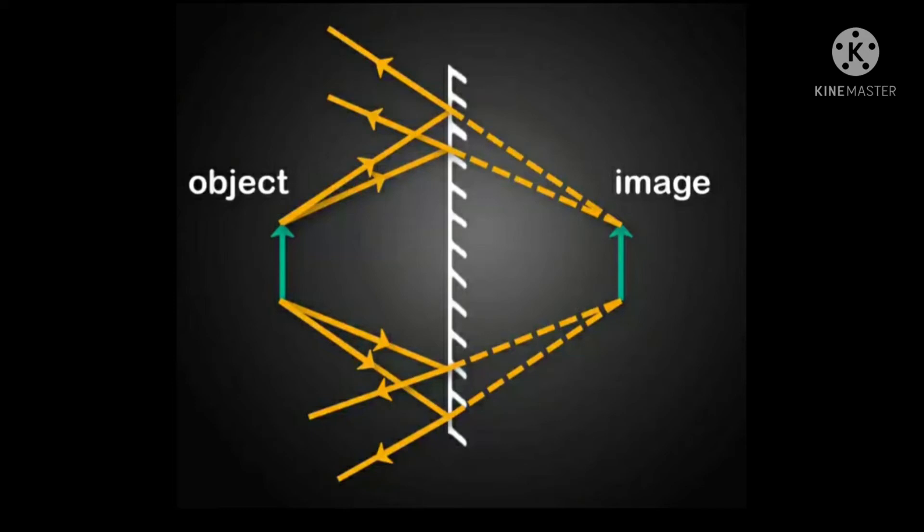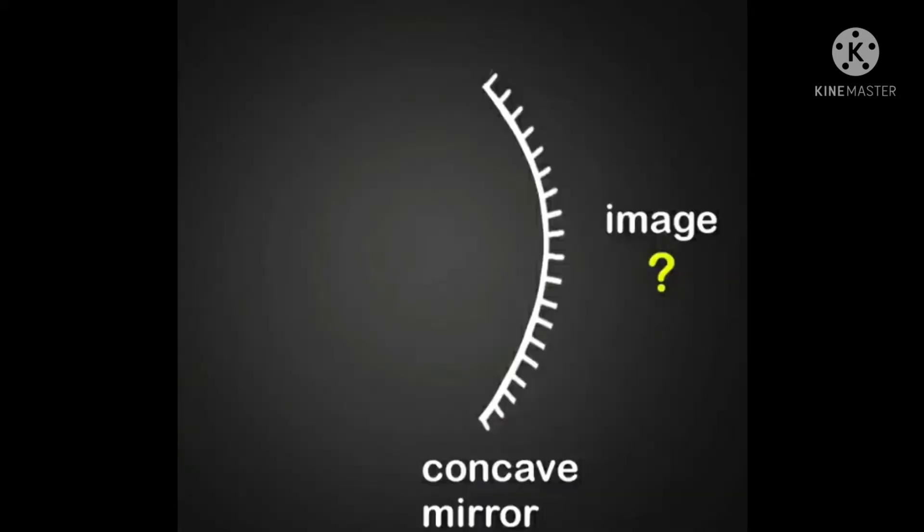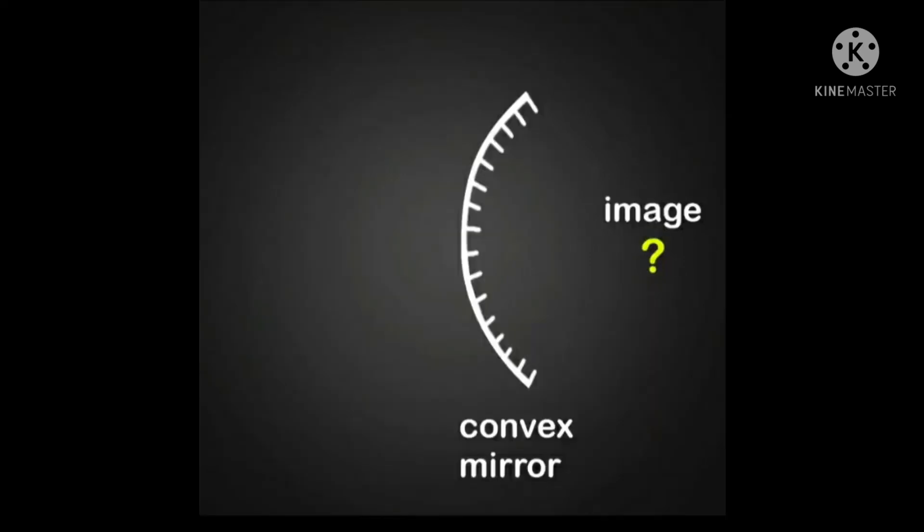So for a plane mirror, the image is drawn first and then light rays. But we cannot do this for a concave or convex mirror because we are not sure of the properties of the image formed by concave and convex mirrors.